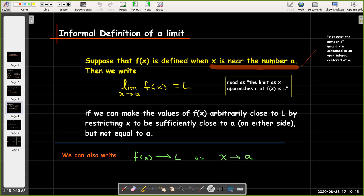So we're going to force, if this limit exists, if this number L exists, that means we can force the values of f of x to be as close as we want to L by choosing x to be sufficiently close to a.